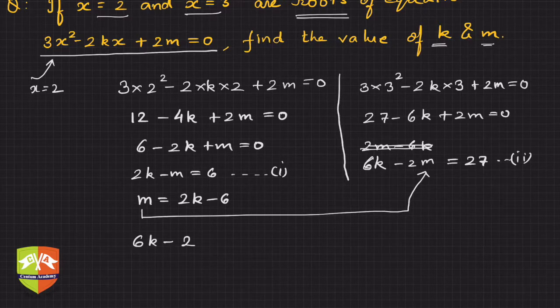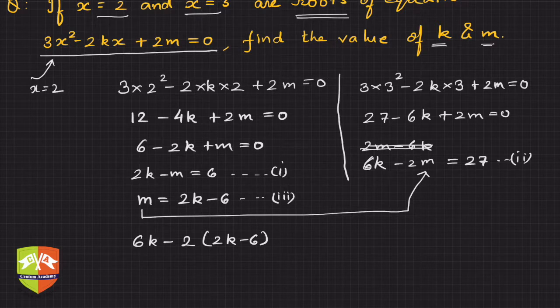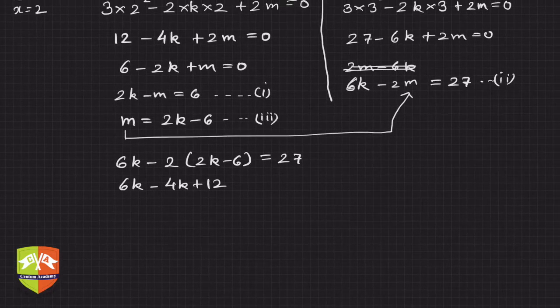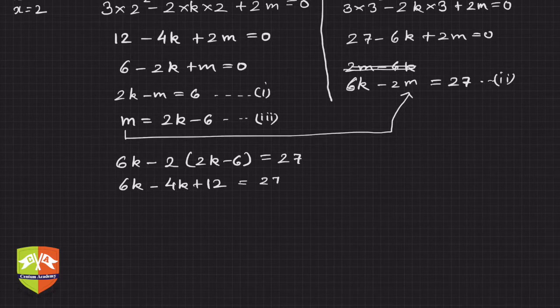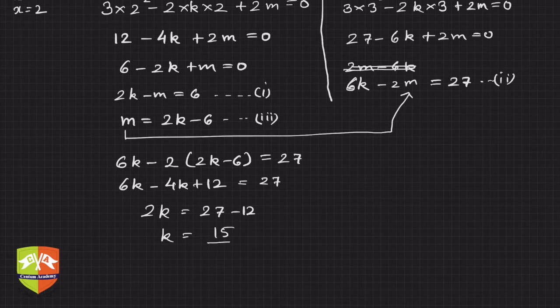So what will you get? 6k minus 2 times m, where m is 2k minus 6 from this relation, and this equals 27. Let us simplify: 6k minus 4k plus 12 equals 27, so 2k equals 27 minus 12. Hence k equals 15 upon 2.